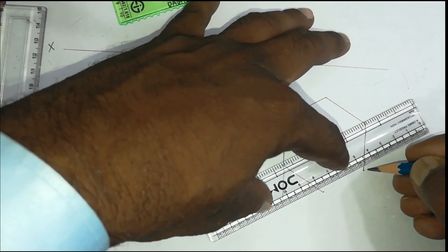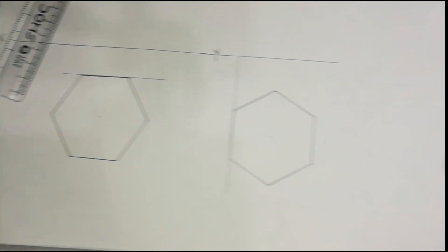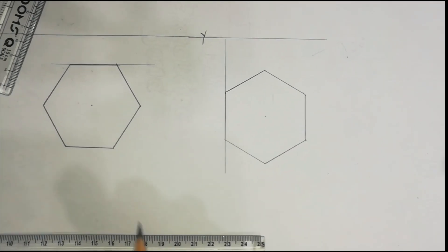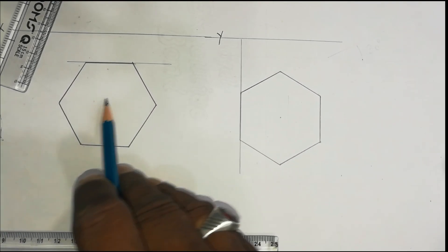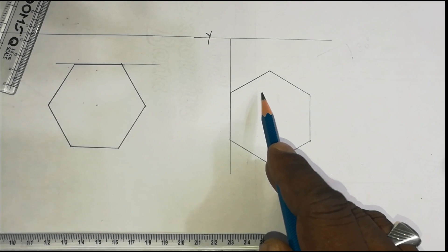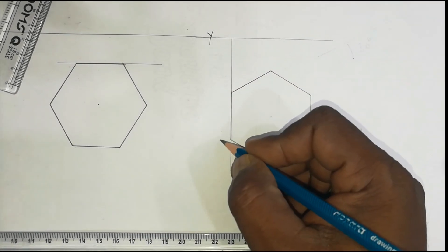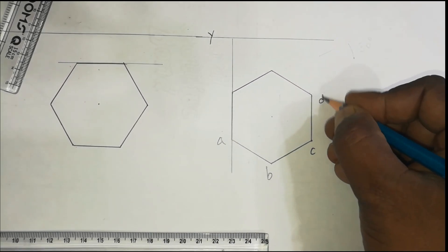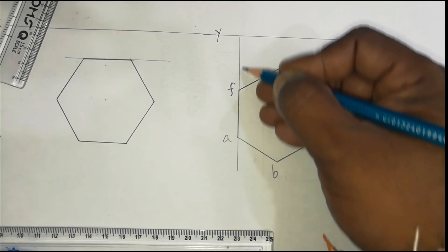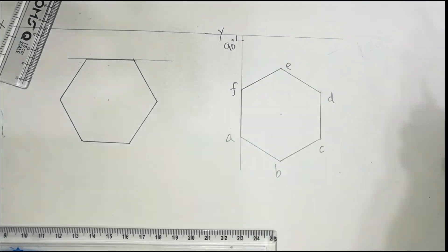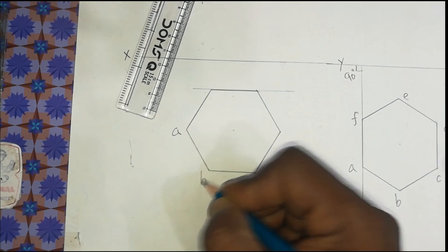Note: in some universities they do not allow templates, so confirm whether it is allowed before the exam. This is the direct way to draw a hexagon. Comparing the two hexagons drawn: the first has one edge parallel to VP, and the second has one edge perpendicular to VP — perpendicular to the XY line. The corners are marked as A, B, C, D, E, F.